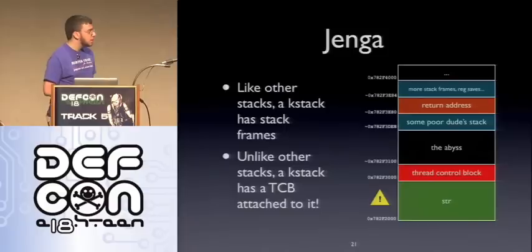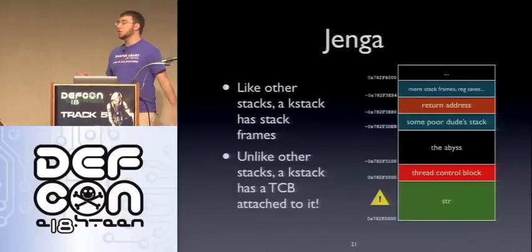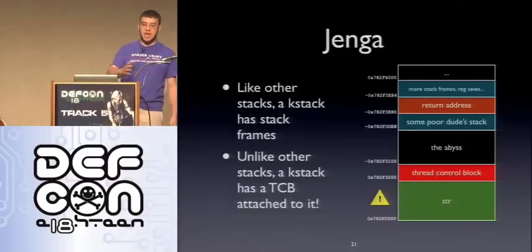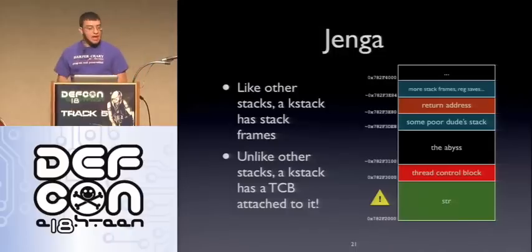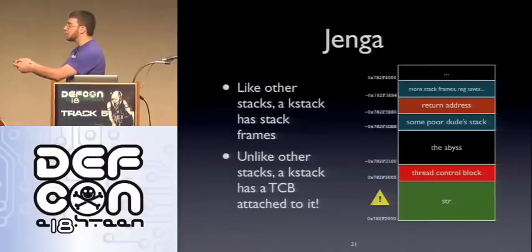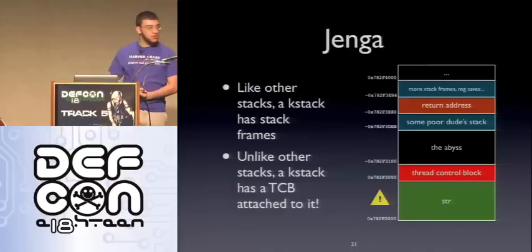What does a kernel stack even look like? Like other stacks, a kernel stack has stack frames — don't confuse these with physical frames. Kernel stacks live in physical frames, but they have stack frames. We have some thread's stack there. There's a thread control block; the stack grows down from the top. There are more stack frames, register save space, and then a return address. I like return addresses — I can trample on return addresses.